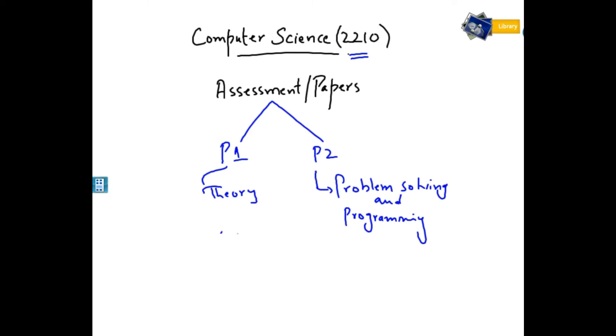For paper one, the time duration for the paper is 1 hour 45 minutes. And same goes here, the time duration is same, which is 1 hour 45 minutes. Calculator allowed, no calculator.